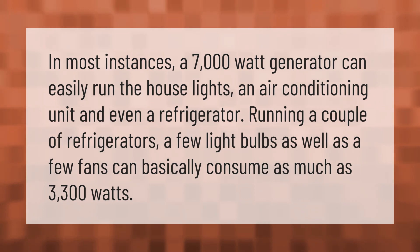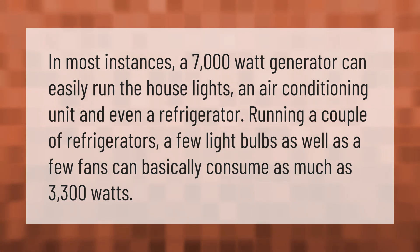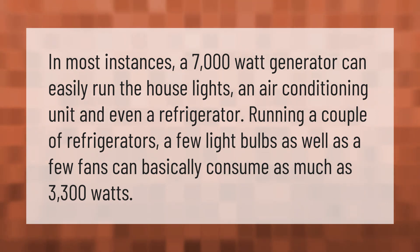In most instances, a 7,000-watt generator can easily run the house lights, an air conditioning unit, and even a refrigerator. Running a couple of refrigerators, a few light bulbs, and a few fans can basically consume as much as 3,300 watts.